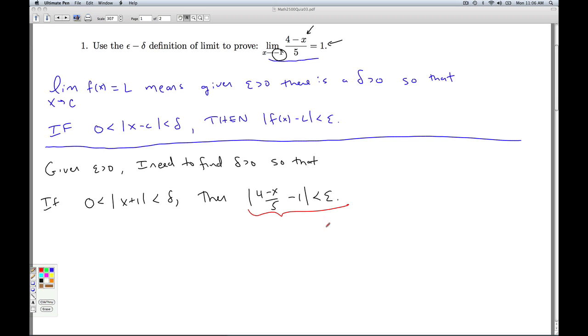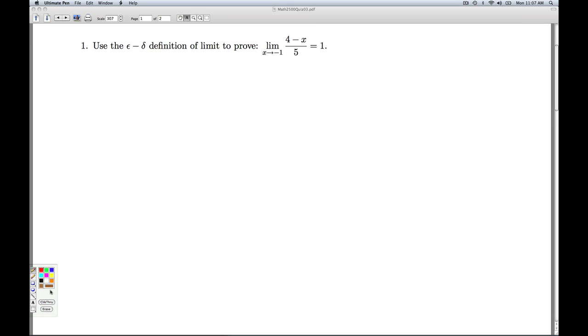So what I'm going to do is work with this inequality and do a bunch of equivalent steps and see if I can get some sort of bound on that quantity. So let's start with 4 minus x divided by 5 minus 1 less than epsilon. I can get a common denominator and then subtract and I can factor out a negative 1 fifth. So a negative 1 from the numerator leaves me with my x plus 1. Now properties of the absolute value tell me I get that. And what's the absolute value of negative 1 fifth? 1 fifth.